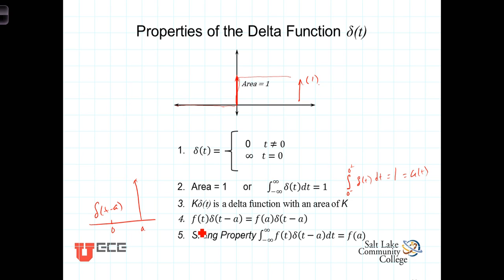So, if you have some function, f of t, multiplying a delta function at t equals a, you end up with a delta function that has the area, or has an area, equal to the value of the function at t equals a.